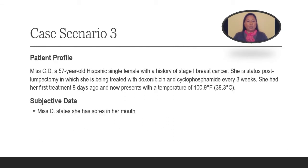I'm glad you made it back. Let's move on to case scenario number three. Here we have Ms. CD, a 57-year-old Hispanic single female with a history of stage 1 breast cancer. She is status post-lumpectomy and is being treated with doxorubicin and cyclophosphamide every three weeks. She had her first treatment eight days ago and now presents to the ED with a temperature of 100.9.